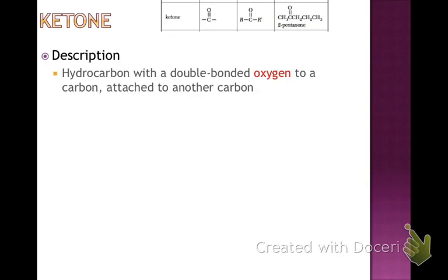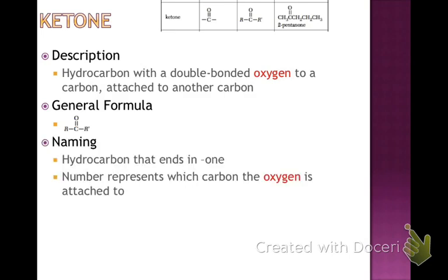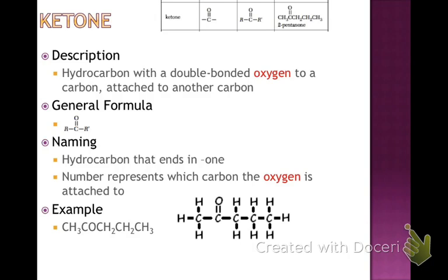Next is a ketone. Ketone and aldehyde look similar; however, a ketone has a double bonded oxygen, and on either side of that carbon there are more hydrocarbons attached. The general formula has the double bonded oxygen to the carbon, with two R groups on either end — whereas an aldehyde would have had a hydrogen on one of these ends. When naming, we change the hydrocarbon ending to ONE (O-N-E) and use a number to show where the double bonded oxygen is. In our example, we count five carbons: one, two, three, four, five.